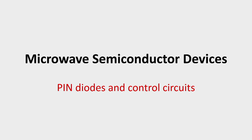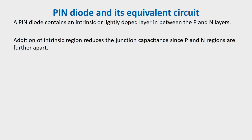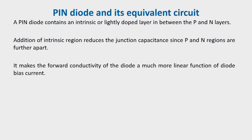In this lecture we discuss PIN diodes and control circuits. A PIN diode contains an intrinsic or lightly doped layer in between P and N layers, and that is why the name of this diode is PIN. The addition of the intrinsic region reduces the junction capacitance since P and N regions are now further apart. Introduction of this intrinsic region also makes forward conductivity of the diode a much more linear function of diode bias current.